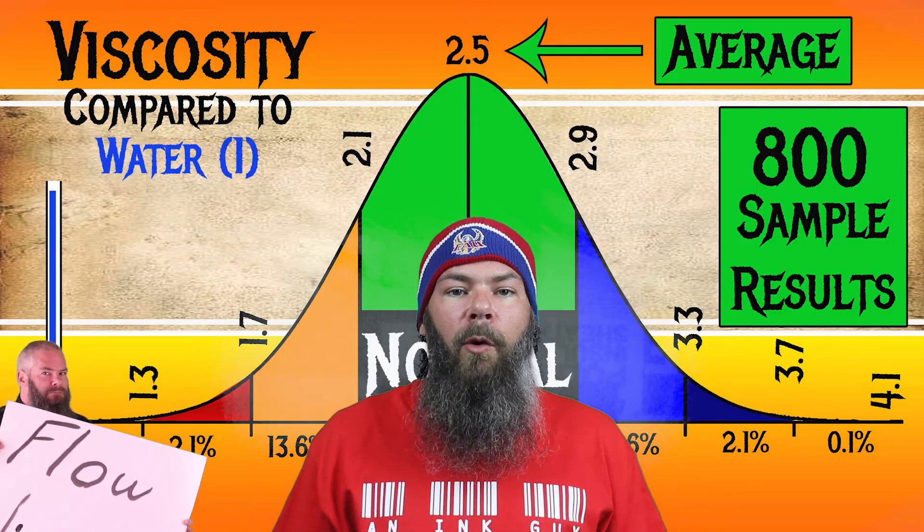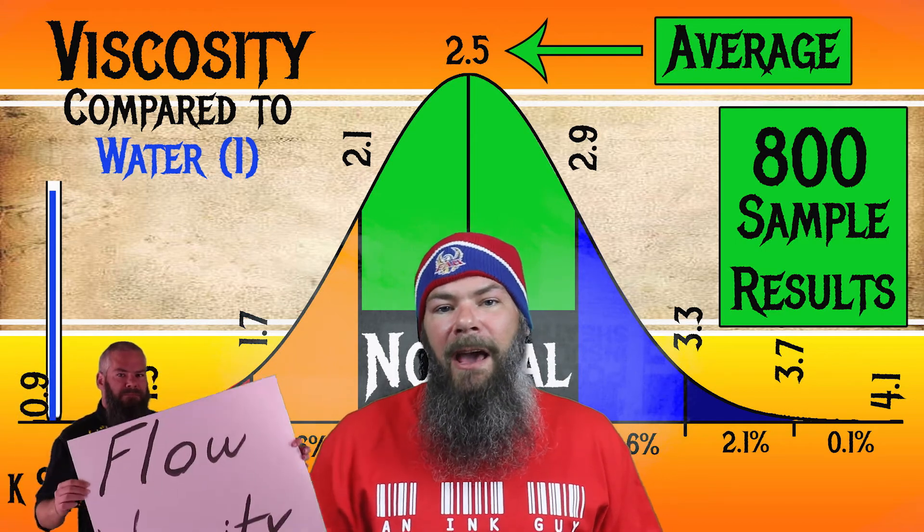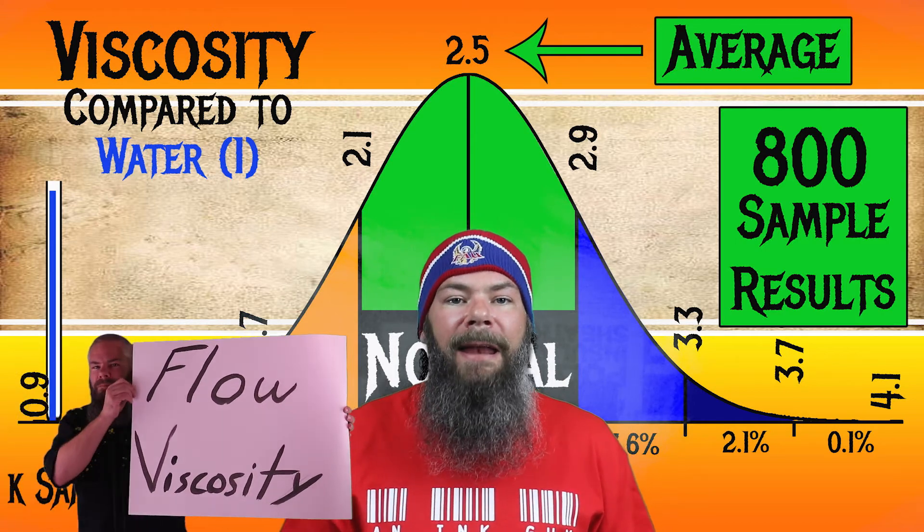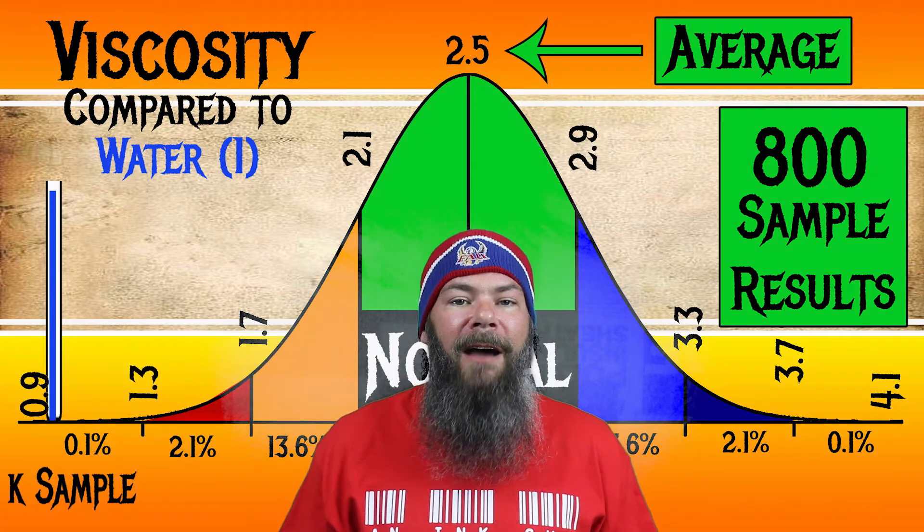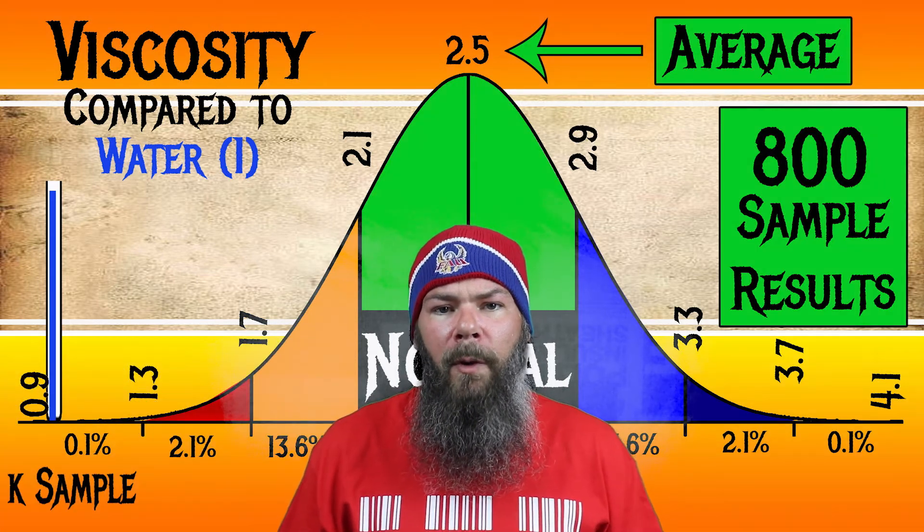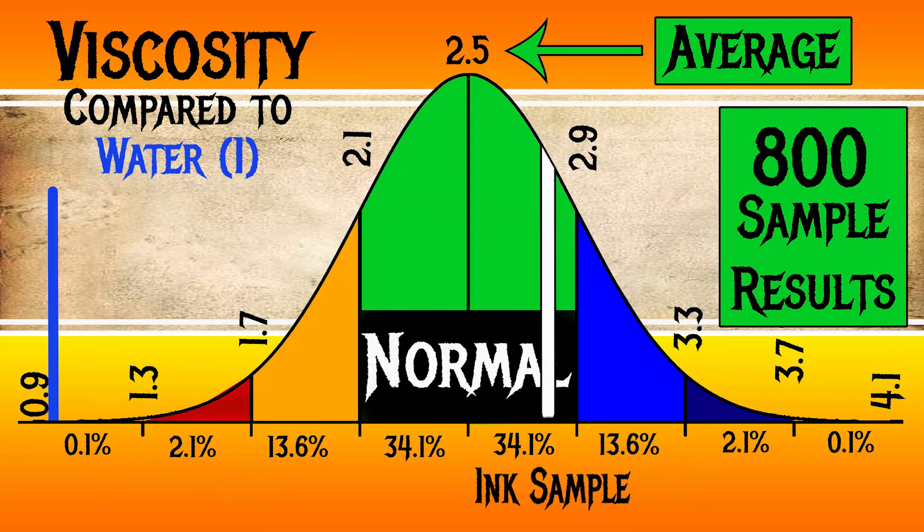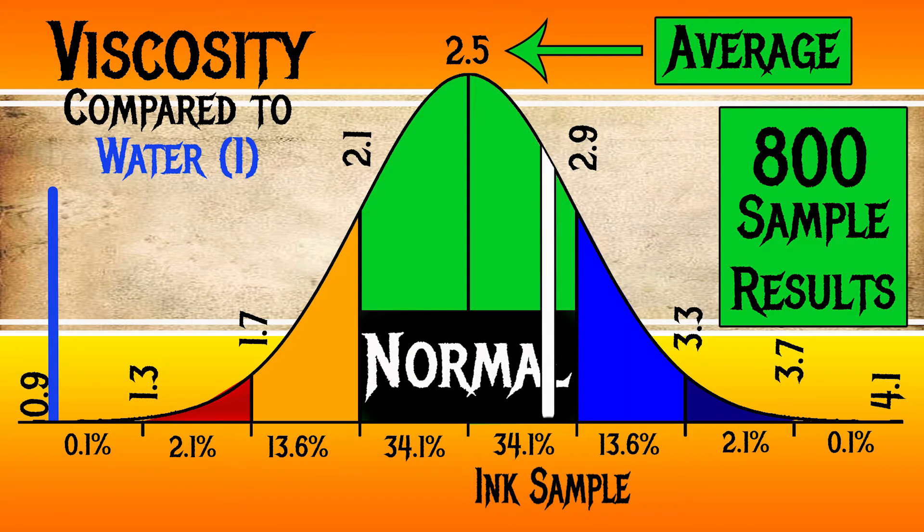I test ink viscosity or flow by using a tilt test. And I've linked that video and put that in here for you. Now for the inks I've tested I have found an average viscosity of 2.5, with a realm of normal being from 2.1 to 2.9. Pelican 4001's Violet has a viscosity of 2.77, making it normal.